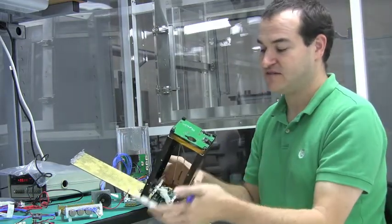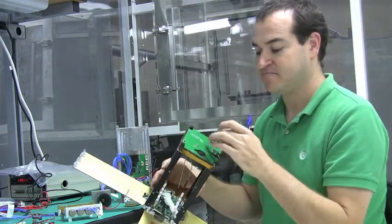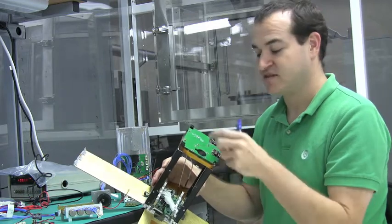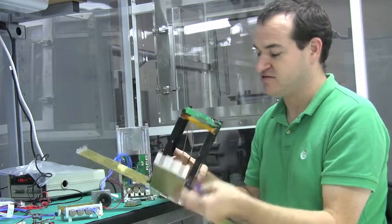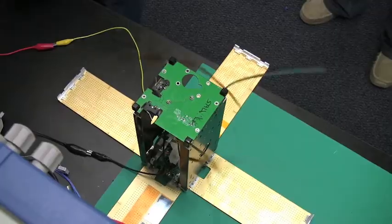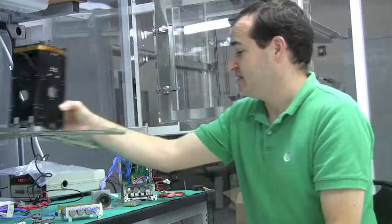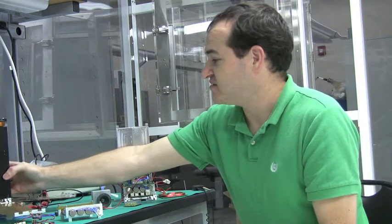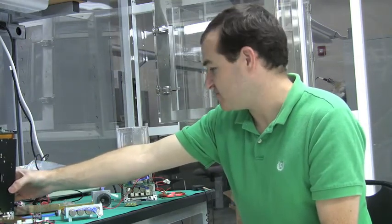The four panels are held together across a nichrome wire, which cuts the fishing line and deploys the panels. Each of the panels are spring-loaded to be 90 degrees to the body. And that is pretty much the end of each of the subsystems.